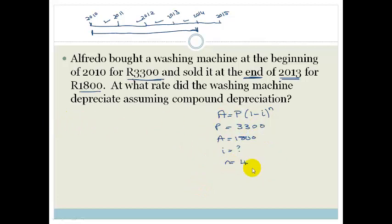So now we can use those numbers and substitute it here and find out what's going on. So we've got 1,800 is equal to 3,300 times by 1 minus I to the power of 4. So the first thing I'm going to do is divide both sides by 3,300 to get just the bracket by itself. So I've got 1,800 over 3,300 is equal to 1 minus I to the power of 4.